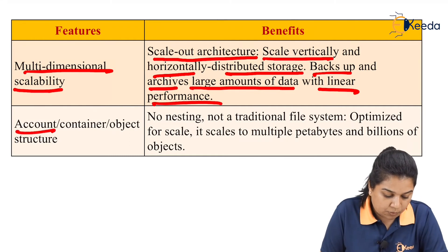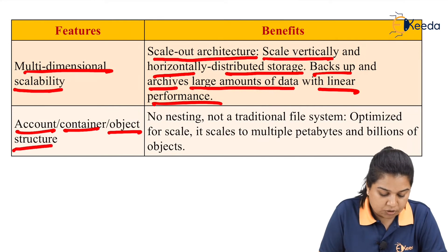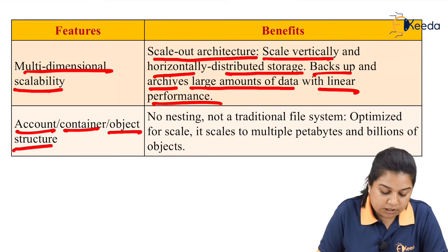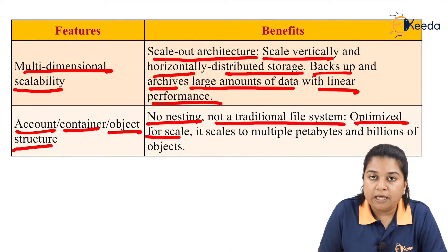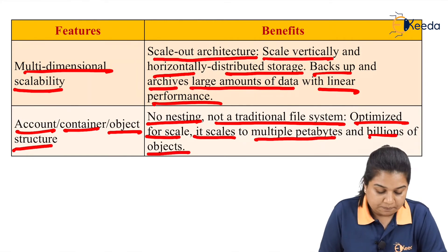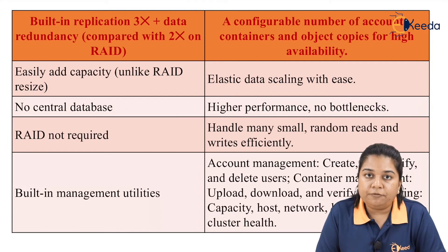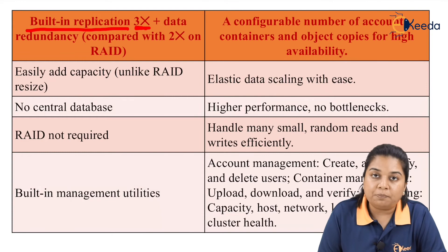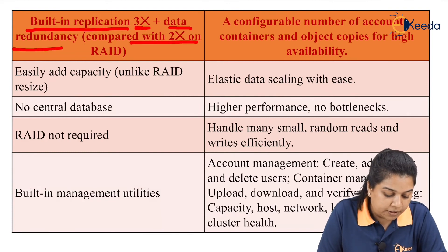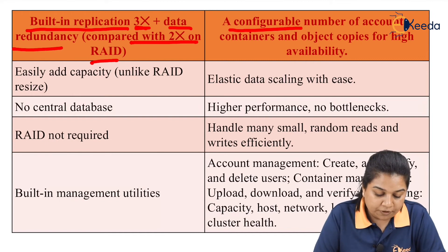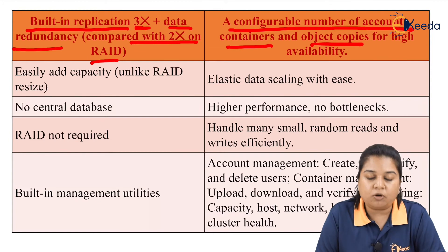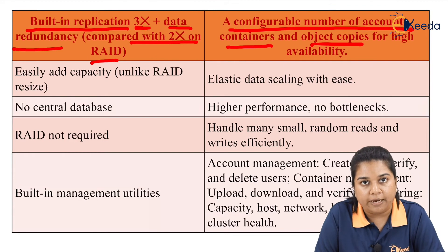The account, container, and object structure feature provides the benefit of no nesting — it is not a traditional file system but is optimized for scale, scaling to multiple petabytes and billions of objects. Built-in replication providing 3x or more data redundancy, compared with 2x on RAID, offers a configurable number of account, container, and object copies for higher availability of information and resources to clients and end users.